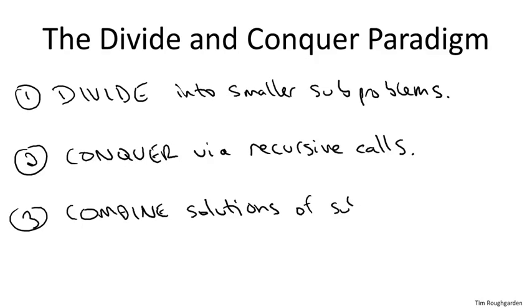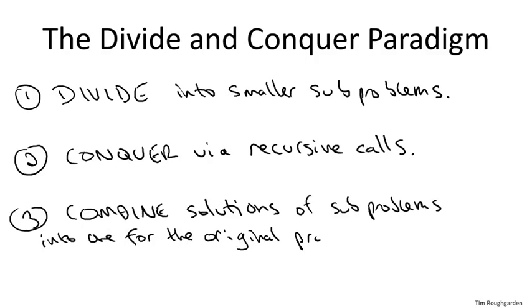So the third step is to combine the solutions to the sub-problems into one of the original problem. Generally, the largest amount of ingenuity happens in the third step. How do you actually quickly combine solutions to sub-problems into one of the original problem? Sometimes you also get some cleverness in the first step with division. Sometimes it's as simple as just splitting an array in two, but there are cases where the division step also has some ingenuity.